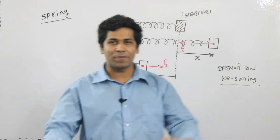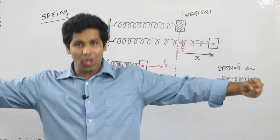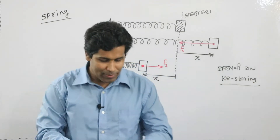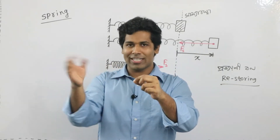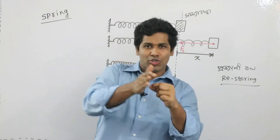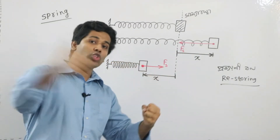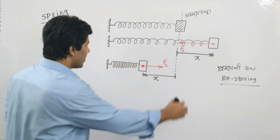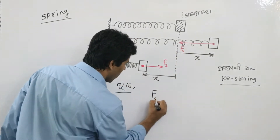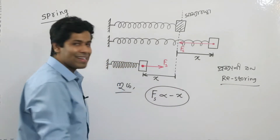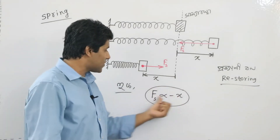Let's talk about it. The spring force FS is proportional to minus x. This x is the displacement, and the force is in the opposite direction. The restoring force is proportional to minus x.